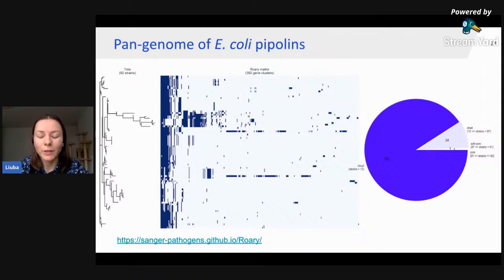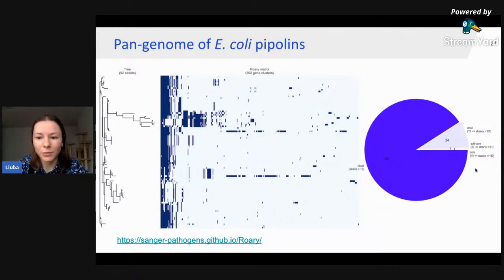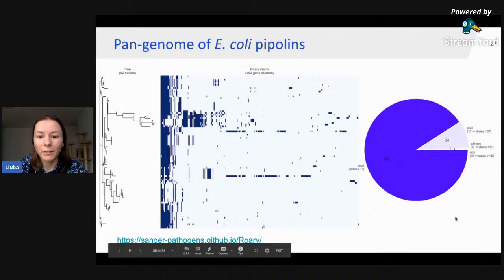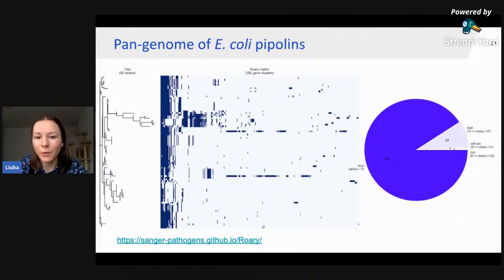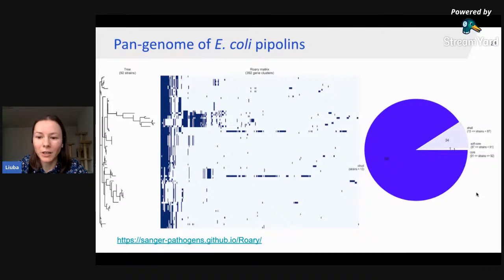To understand the diversity of found Pipolins in their gene composition, we performed pan-genome analysis and were surprised to find that around 400 genes were included in the Pipolins pan-genome. From hierarchical clustering of the gene presence-absence matrix and pie charts, you can see that more than 350 genes were included in the cloud genome — present in less than 15% of Pipolins. The core genome and soft-core genome consisted of only two genes: Pi-Pol B and the XerC-like recombinase. Only 34 genes were present in the shell genome.